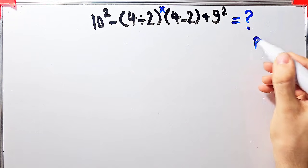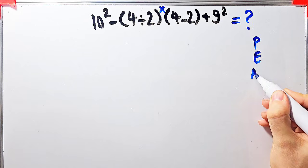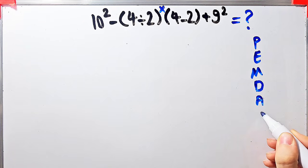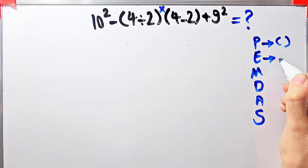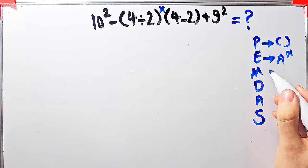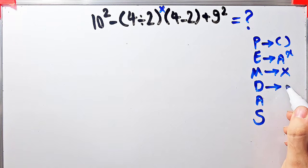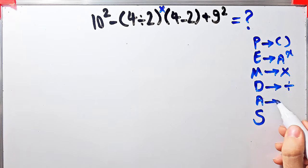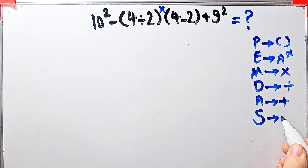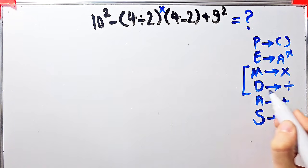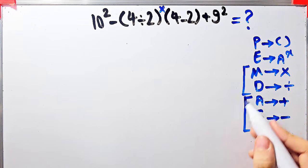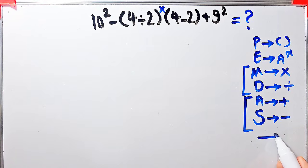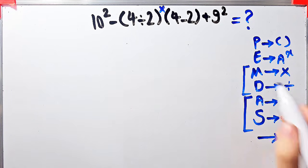To solve this question we need to follow the PEMDAS rule. P stands for parentheses, E for exponent, M for multiplication, D for division, A for addition, and S for subtraction. Multiplication and division have the same level of priority; addition and subtraction also have the same level of priority. When we have both in an expression, we start from the left and simplify.